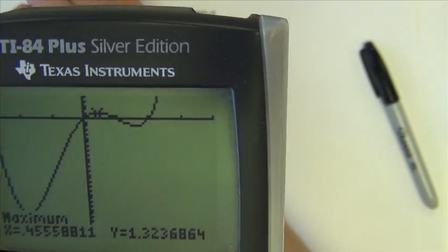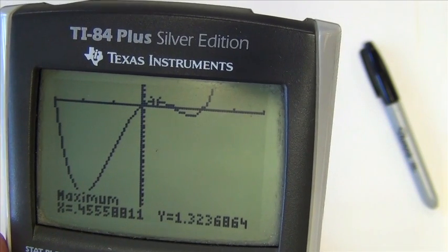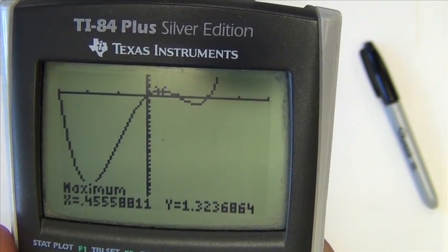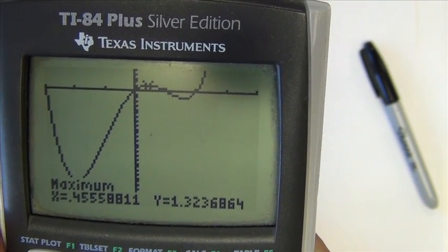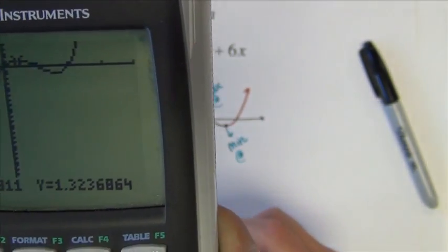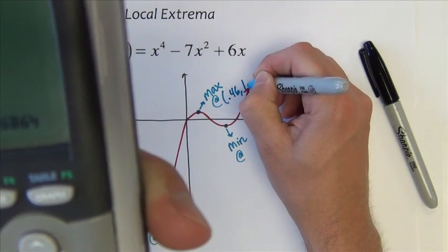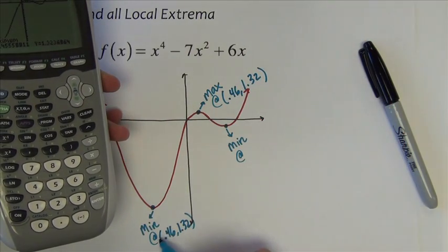So writing the point down, I'm just going to round it. It's at the point 0.46, 1.32. And I wrote that at the wrong spot. So there's my maximum, and I wrote it down here.